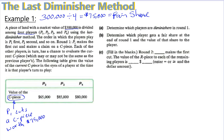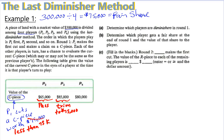After player one cuts the piece, player two inspects it and thinks it is worth $65,000 — less than a fair share — so player two says pass. That same piece comes to player three, who inspects it and thinks it's worth $85,000. So player three must trim it to $75,000 according to player three's view. But once the trim occurs, player one no longer wants the piece — player one thinks it's now worth less than $75,000. Player three is now considered the owner, because player three is currently the last diminisher.